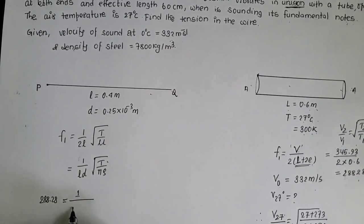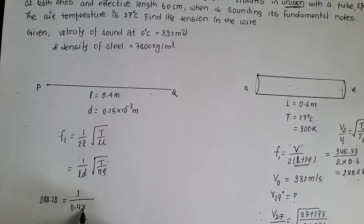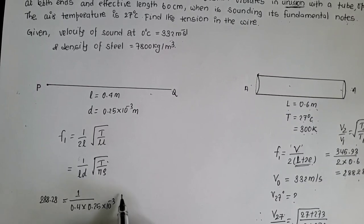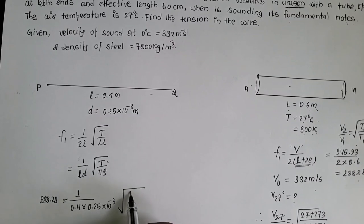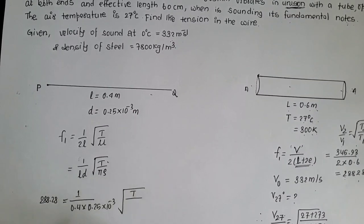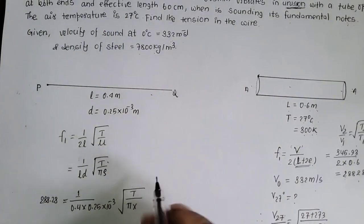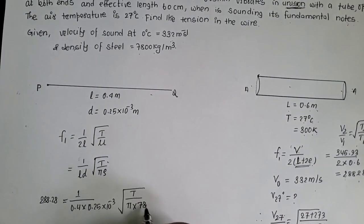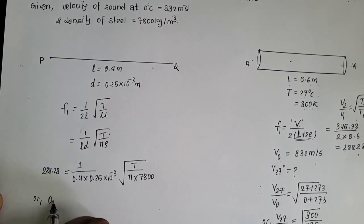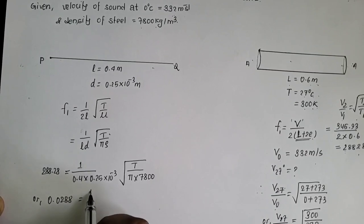Length of the string 0.4, diameter of the string 0.25 into 10 to the power minus 3 square root of tension applied on the string we don't know T ko value cha rabha pai and density of the string vale ra degosha 7800 kg per meter cube 7800.